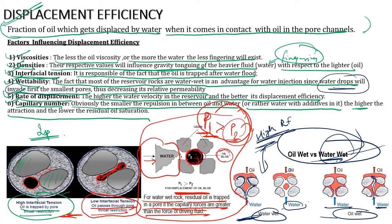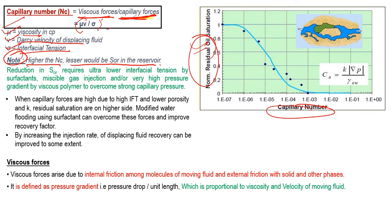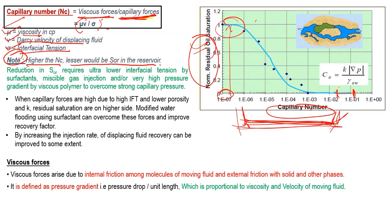Capillary number is the ratio of viscous forces to capillary forces: Nc = mu * v / sigma, where mu is viscosity of displacing fluid, v is velocity, and sigma is interfacial tension. A very important note: higher the capillary number, less would be the residual oil saturation. This graph shows capillary number versus residual oil saturation — when having a high capillary number, residual saturation is low; when having a low capillary number, residual oil saturation is high. I will always try to implement methods that create a high capillary number.